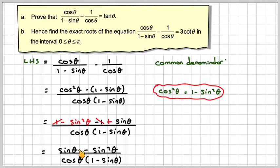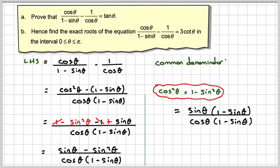Now, if we look at the numerator, we have a common factor of sine theta. So it becomes sine theta times 1 minus sine theta over cos theta times 1 minus sine theta.